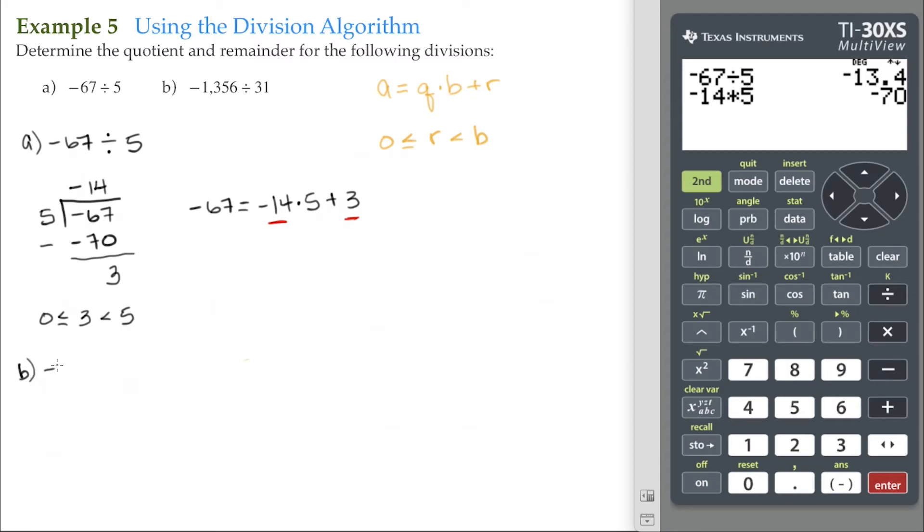Now we'll do negative 1,356 divided by 31. So we have 31, our box, negative 1,356. Using our negative key: 1,356 divided by 31.